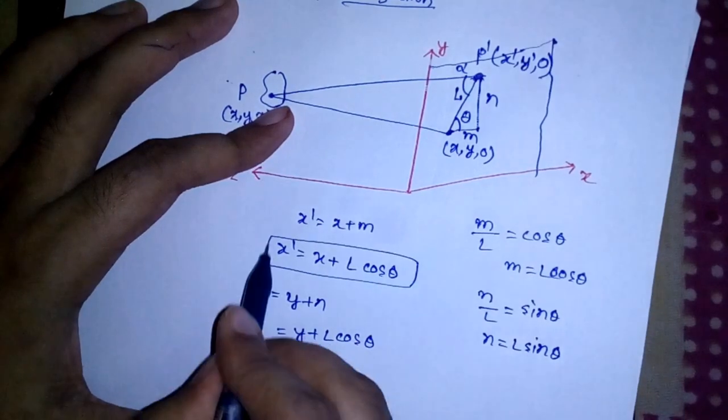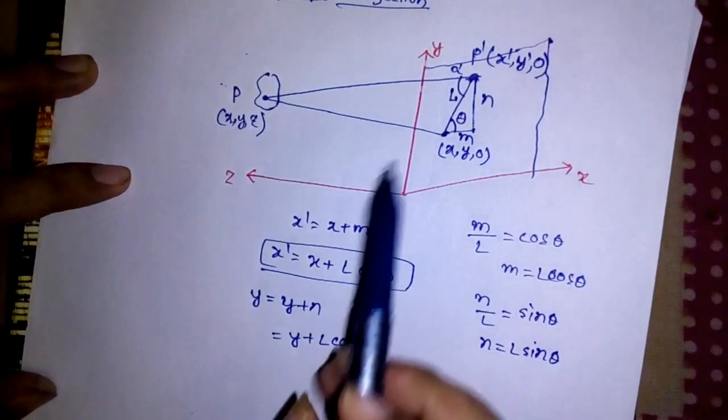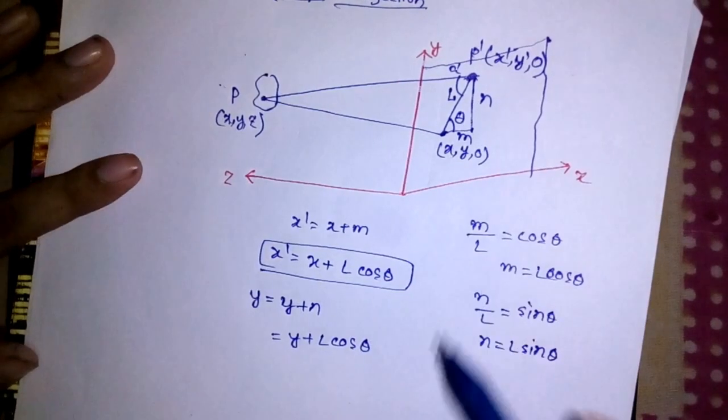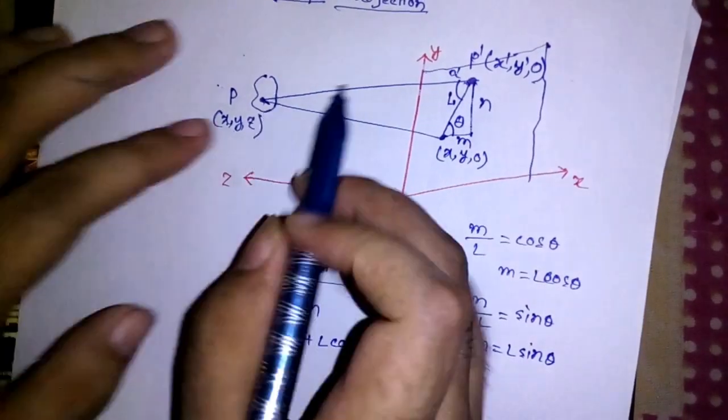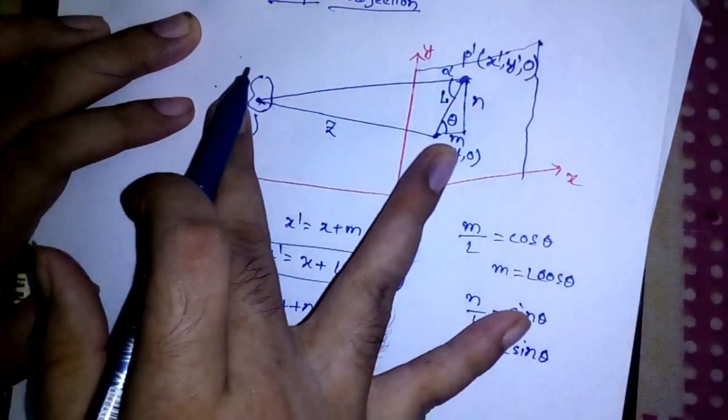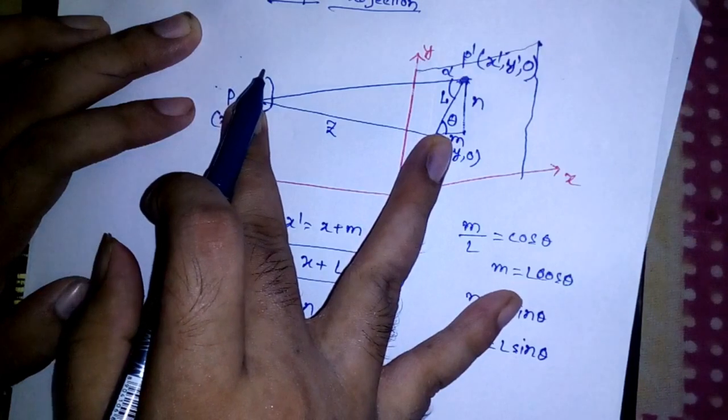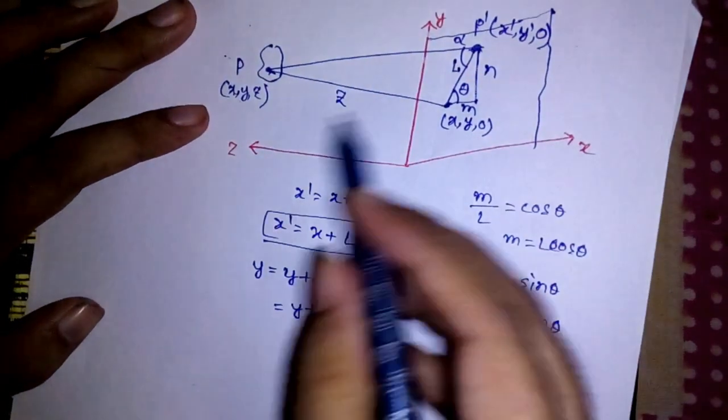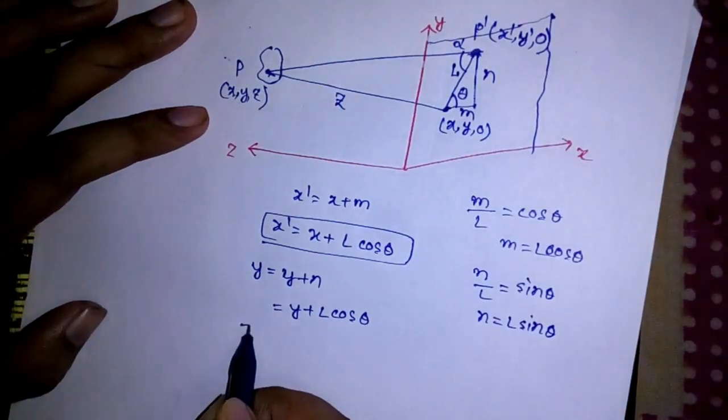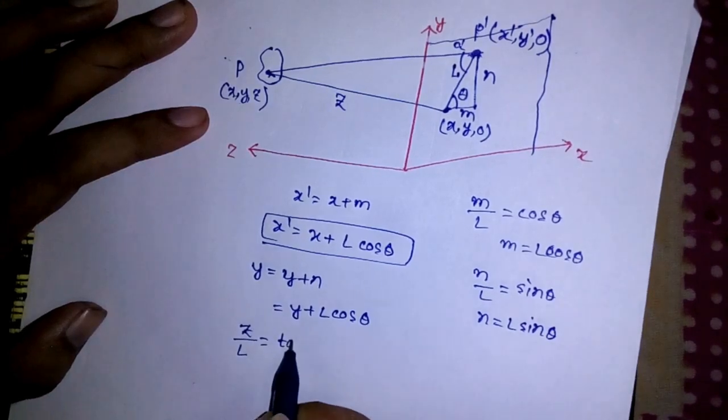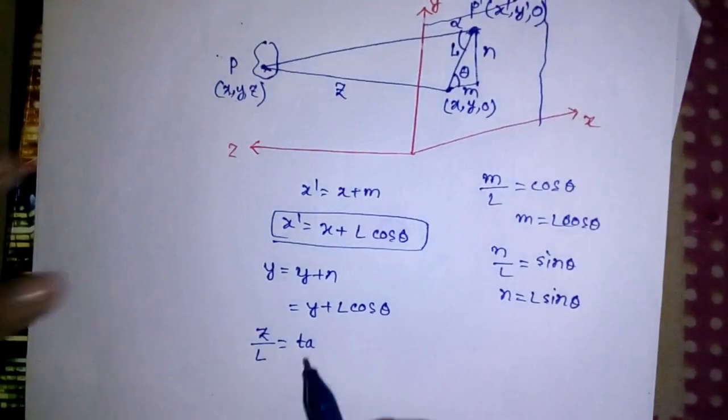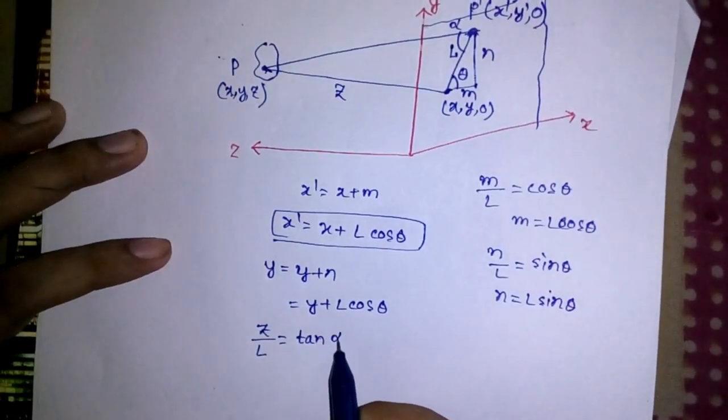Now I need to eliminate this L. How can I do that? I can use this big triangle with the help of this angle alpha. One thing you should note: this distance is nothing but Z because this coordinate is Z and we travel Z distance to project this. So if I take this triangle then I can write Z by L.